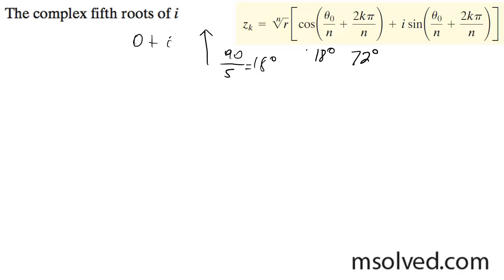It's a fifth root, so if r equals 1, 1 raised to the 1/5 is just 1. We're going to get cosine of 18 degrees plus i sine of 18 degrees, and then cosine of 90 degrees plus i sine of 90 degrees.